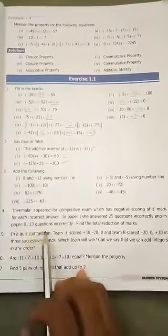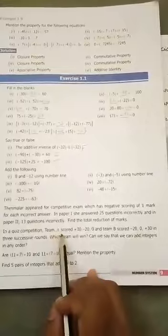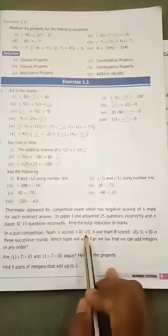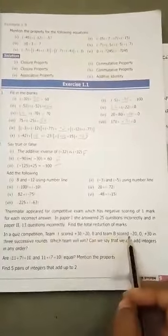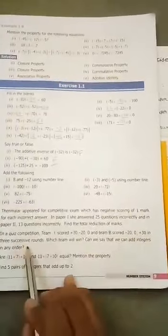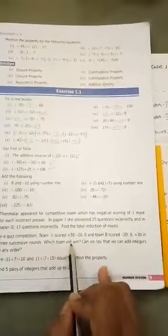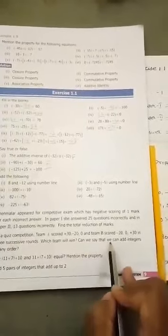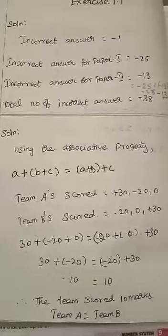Fifth question. In a quiz competition, team A scored 30, minus 20, 0. And team B scored minus 20, 0, 30 in 3 successive rounds. Which team will win? Can we say that we can add integers in any order?